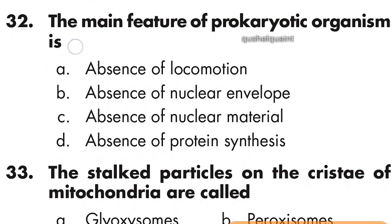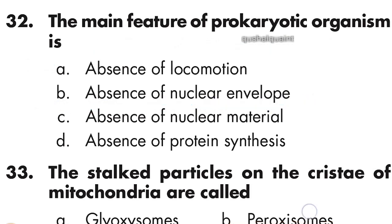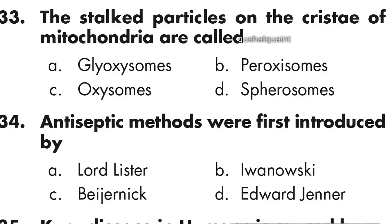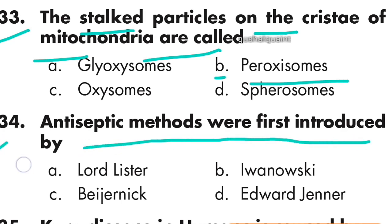Question number 32: The main feature of a prokaryotic organism is the absence of a nuclear envelope. Option B is right — absence of nuclear envelope. Question number 33: The stacked particles on the cristae of mitochondria are called oxysomes. Option B is right — oxysomes.